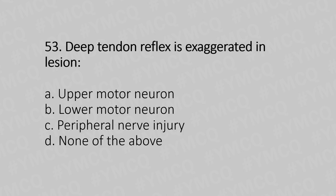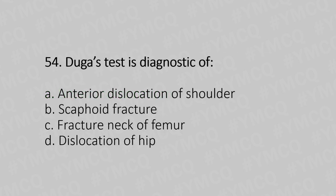Question 53: Deep tendon reflex is exaggerated in lesion of — Option A: upper motor neuron, Option B: lower motor neuron, Option C: peripheral nerve injury, Option D: none of the above. The answer is Option A, upper motor neuron.